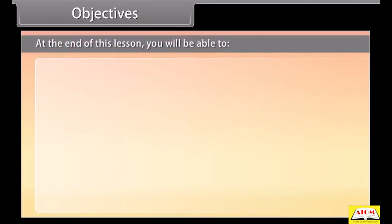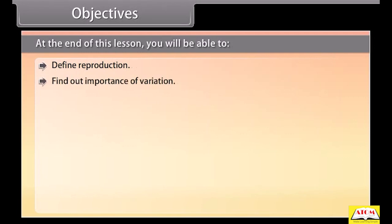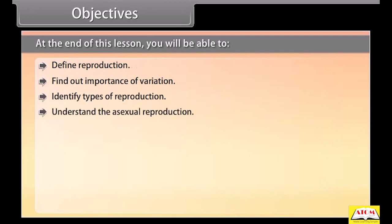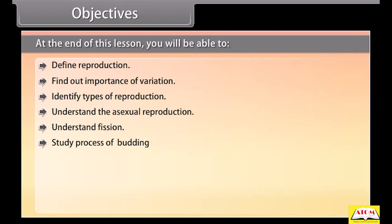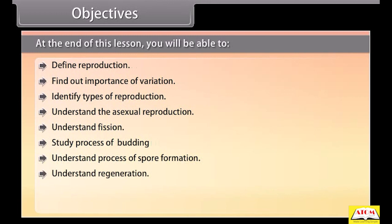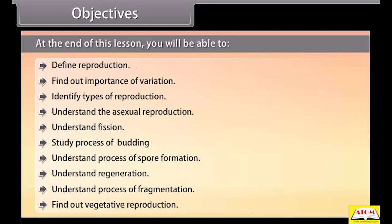At the end of this lesson, you'll be able to: define reproduction, find out the importance of variation, identify types of reproduction, understand asexual reproduction, understand fission, study the process of budding, understand the process of spore formation, understand regeneration, understand the process of fragmentation, and find out vegetative reproduction.